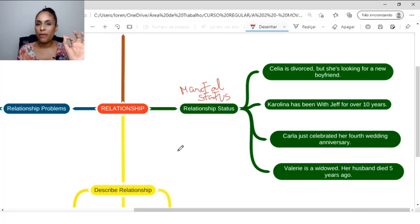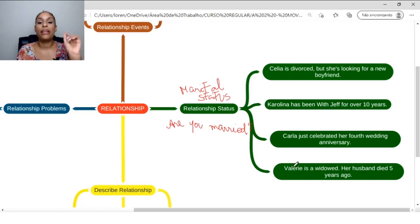To ask someone's marital status, you can ask, for example, we already learned this: Are you married? Are you married?